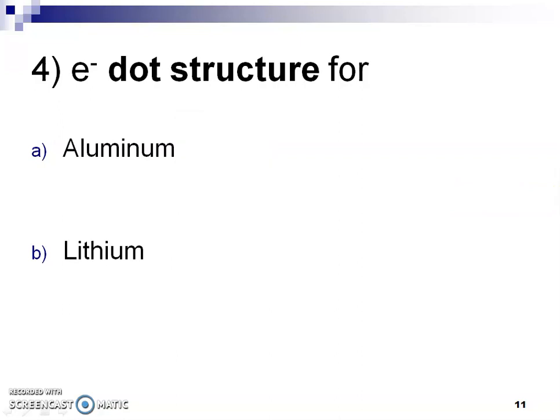Number four, same thing here with aluminum, you need three single electrons, so it doesn't matter if it's the top three, the bottom three, as long as you have three single electrons on three sides of the aluminum symbol.